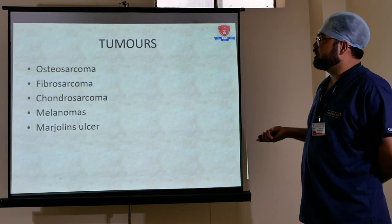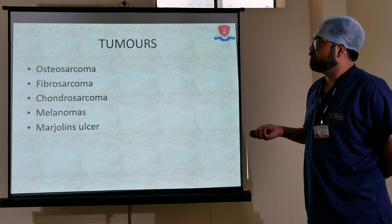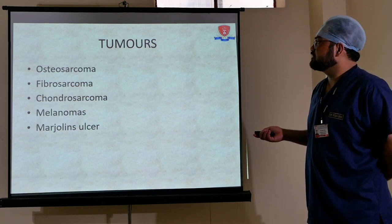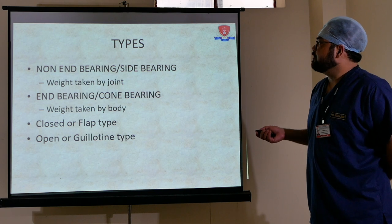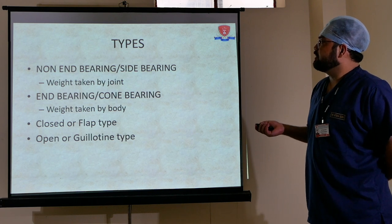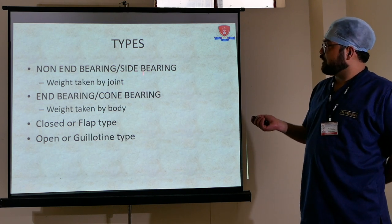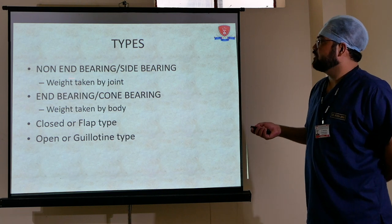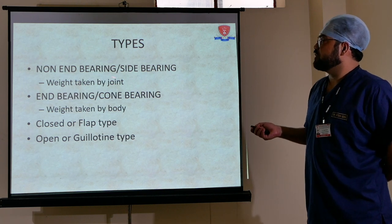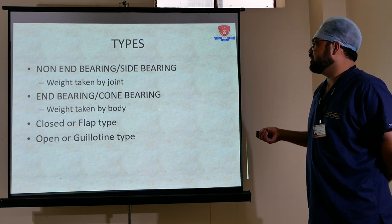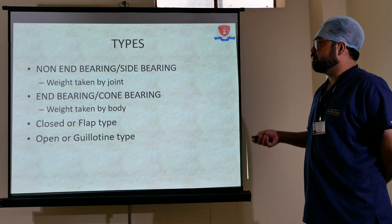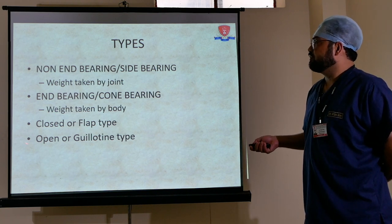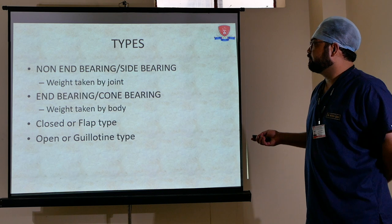Tumor indications include osteosarcoma, fibrosarcoma, chondrosarcoma, melanomas, and Marjolin's ulcers. Types of amputation: non-weight-bearing — weight taken by joints; end-bearing — weight taken by the bone end; closed or flap type; and open or guillotine type.